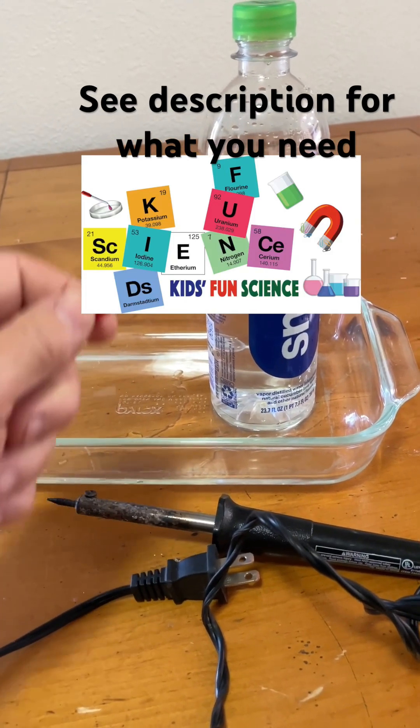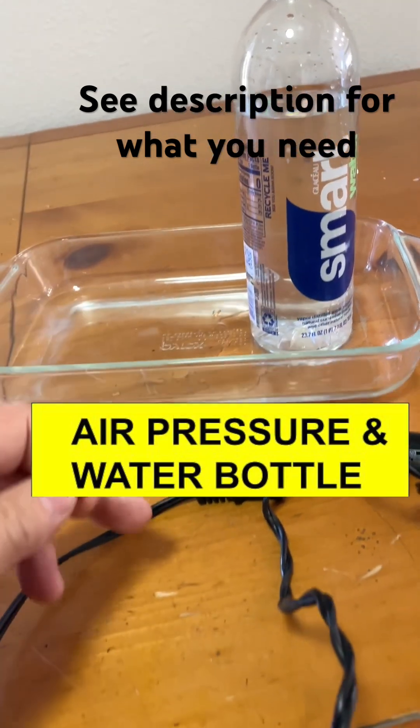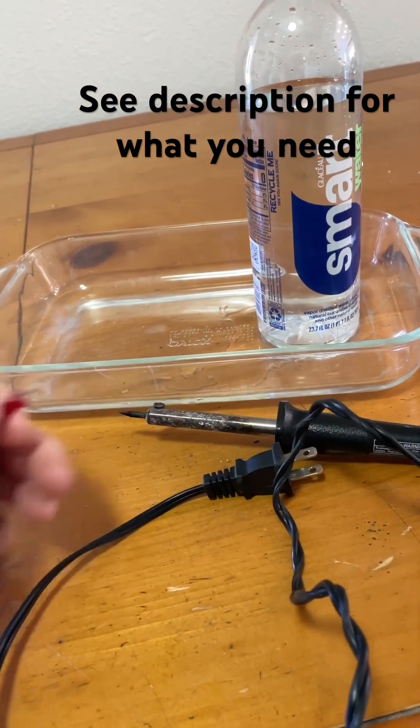Welcome back to Kids Fun Science. My name is Ken. Today's experiment is air pressure and a water bottle. You need something sharp to put a hole in the water bottle. Adult supervision is required.